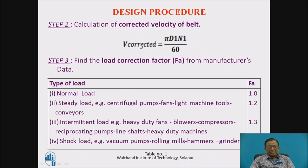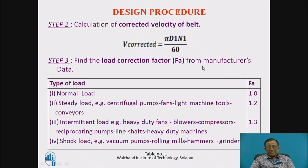Once the selected standard diameters are known, the belt velocity changes, so a corrected velocity V_corrected is recalculated using the equation π·D1·N1/60. The next step is to apply the load correction factor FA from manufacturer's data, because the manufacturer rates the belt under a standard load type, while practical applications may differ. For example, for a centrifugal pump application, the load correction factor is selected as 1.2.